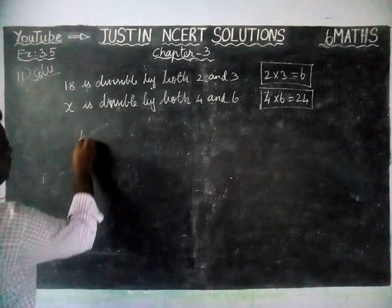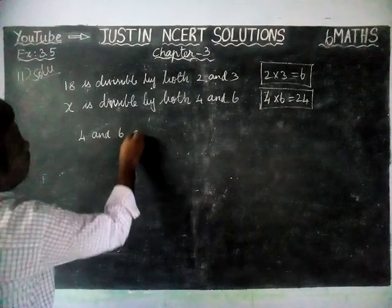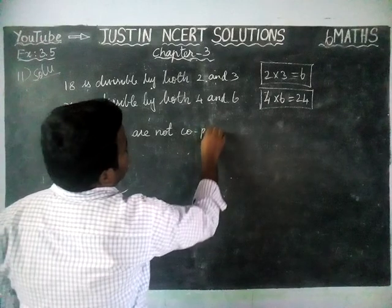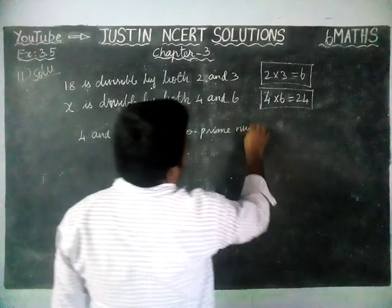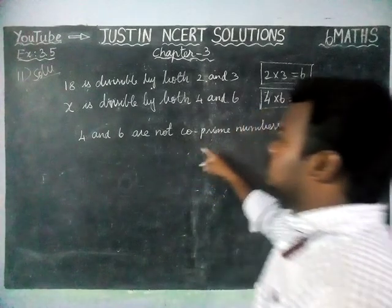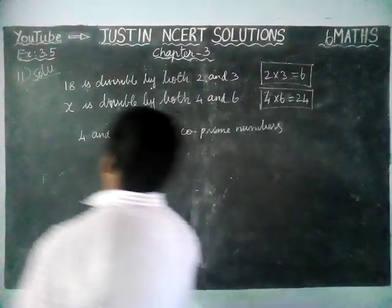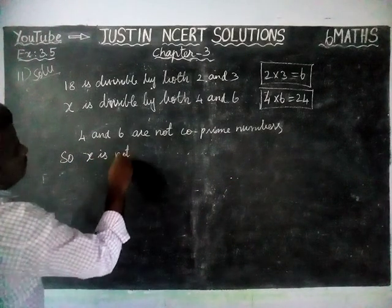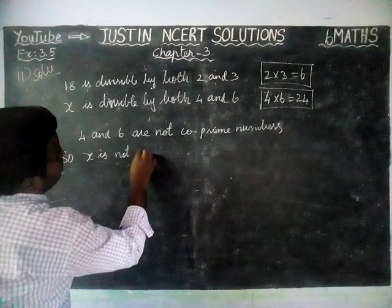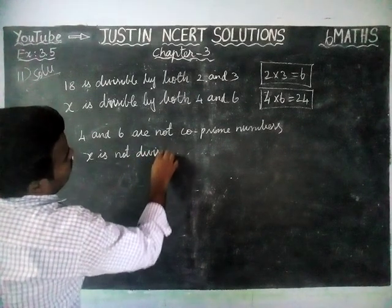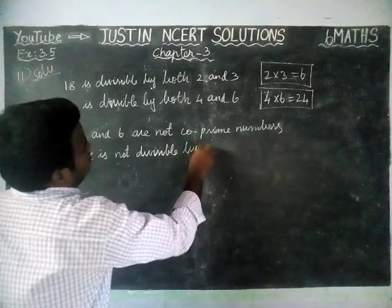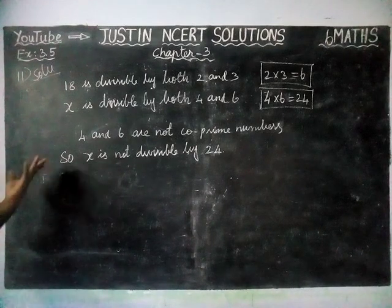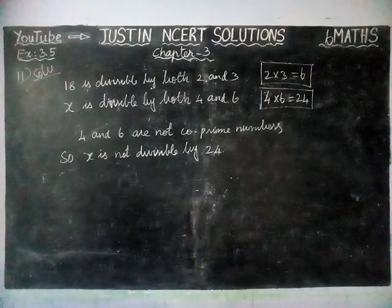We will check it. Since 4 and 6 are not co-prime numbers, x may or may not be divisible by 24. We cannot say that it should definitely be divisible by 24. We will verify with examples.